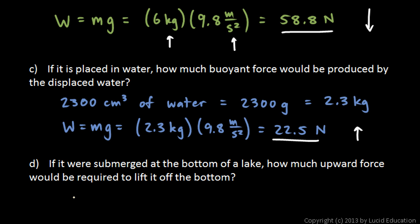We can just say 58.8 newtons minus 22.5 newtons. And that comes out to 36.3 newtons. If we apply 36.3 newtons of upward force along with the buoyant force from the displaced water, that will equal the 58.8 newtons of gravity. That will be enough force to lift it off the bottom.